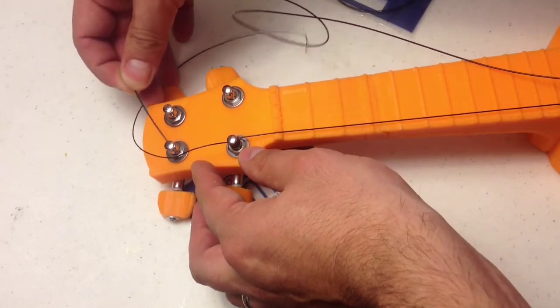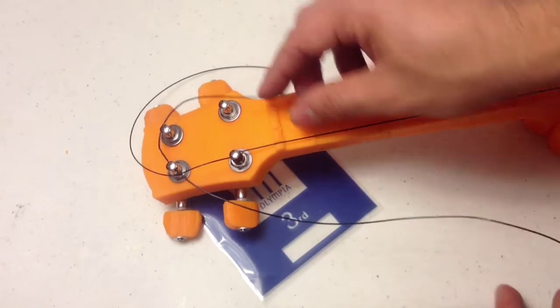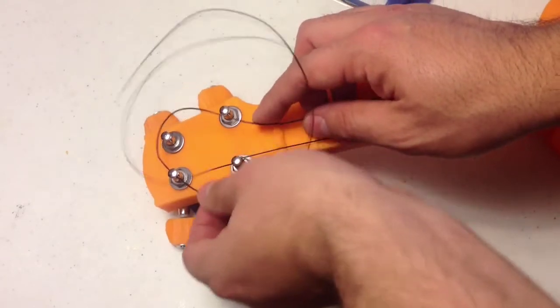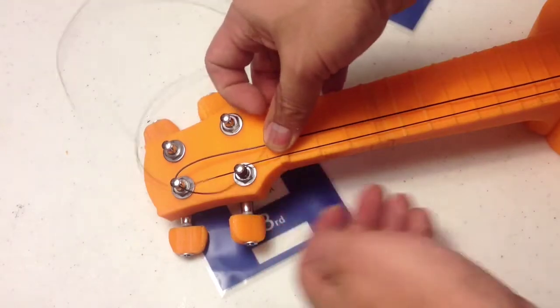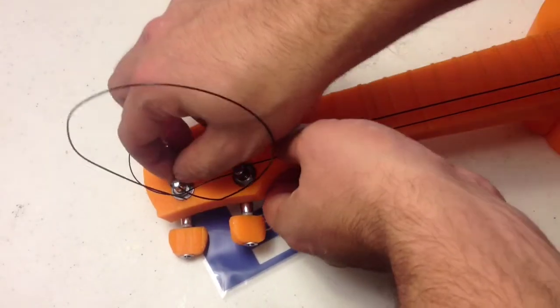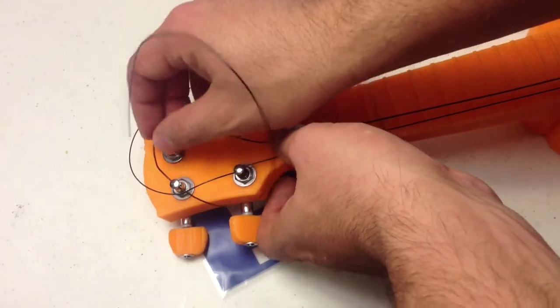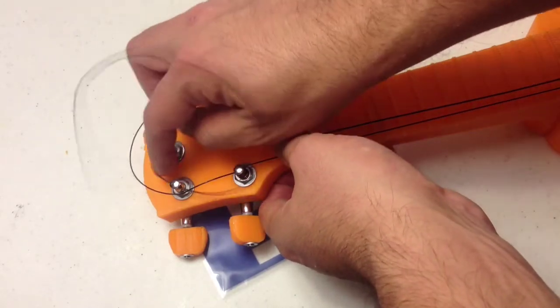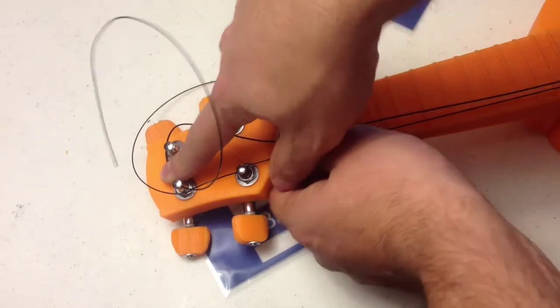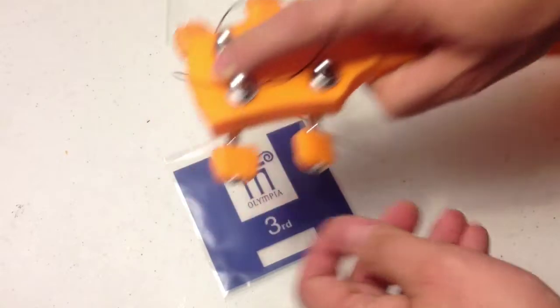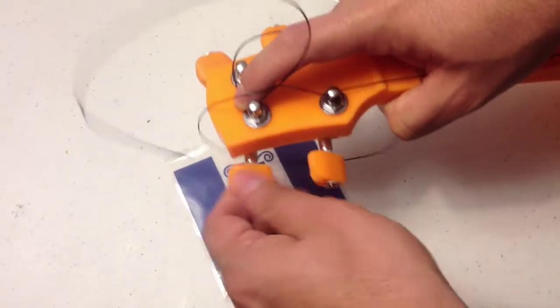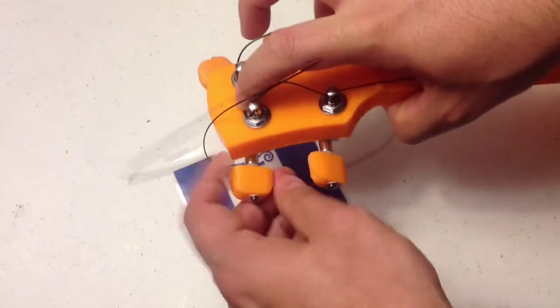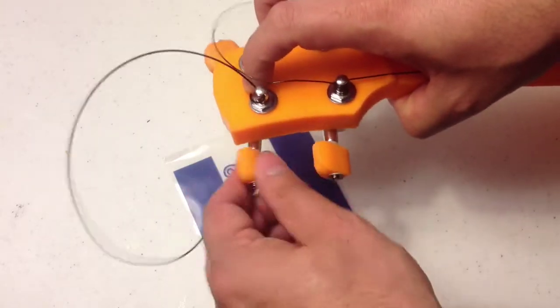And just like last time, I like to pull it tight first to see where the length would be, and then back it out. And once I have it set where I like it, I just go through, tightening it.